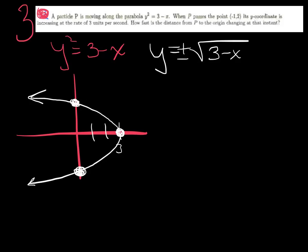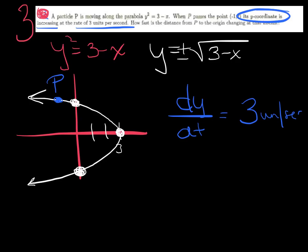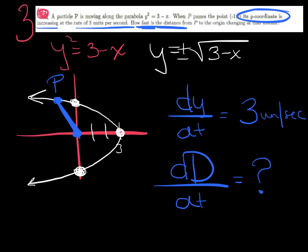When P passes through the point negative 1, 2. So negative 1, 2 is my P point. Its Y coordinate is increasing at a rate of 3 units per second. So the derivative of Y with respect to time increasing is going to get me a positive 3 units per second. How fast, there's my question, looking for a derivative, is the distance? Everybody's favorite word. The derivative of distance with respect to time. How fast is that changing from point P to the origin at that instant? So let me finish drawing my picture. It says how fast from point P to the origin. This is what we're talking about. How fast is that distance changing at point P at that instant?